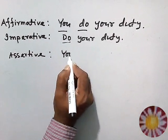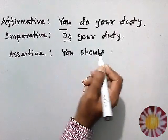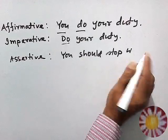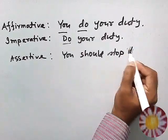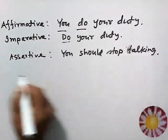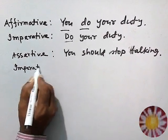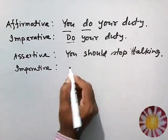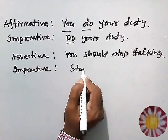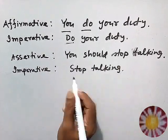For example, in an assertive sentence: 'You should stop talking.' If we change this statement into an imperative sentence, we can write: 'Stop talking.' So 'you should' is removed, and the sentence begins directly with the verb 'stop.'